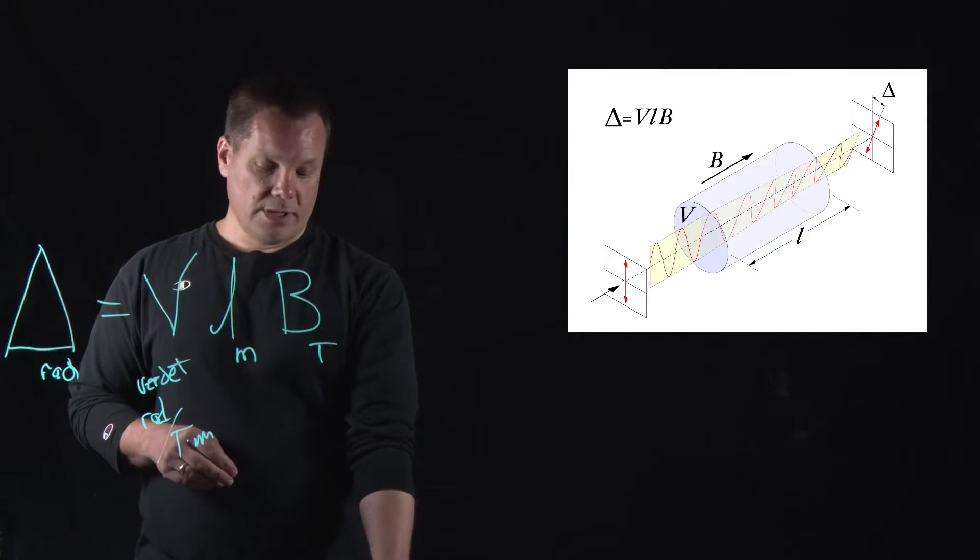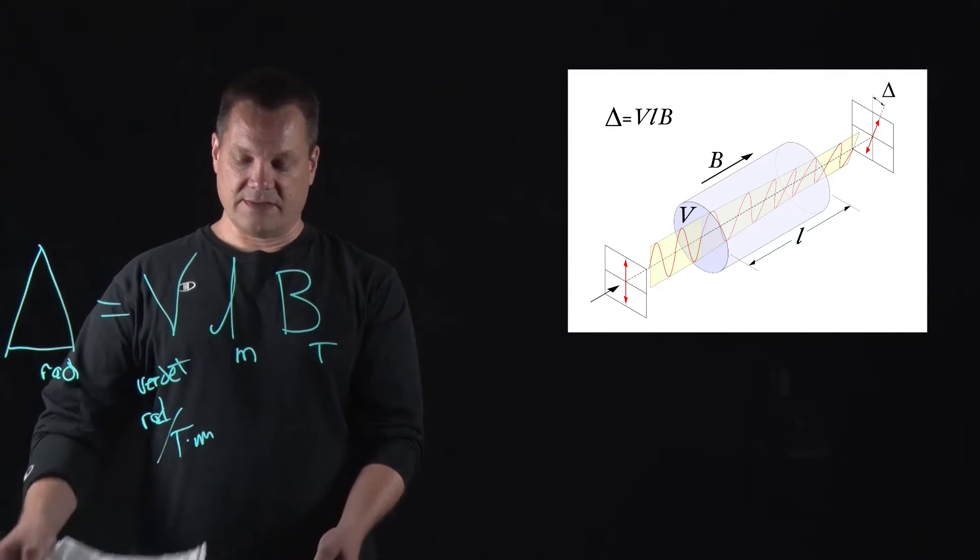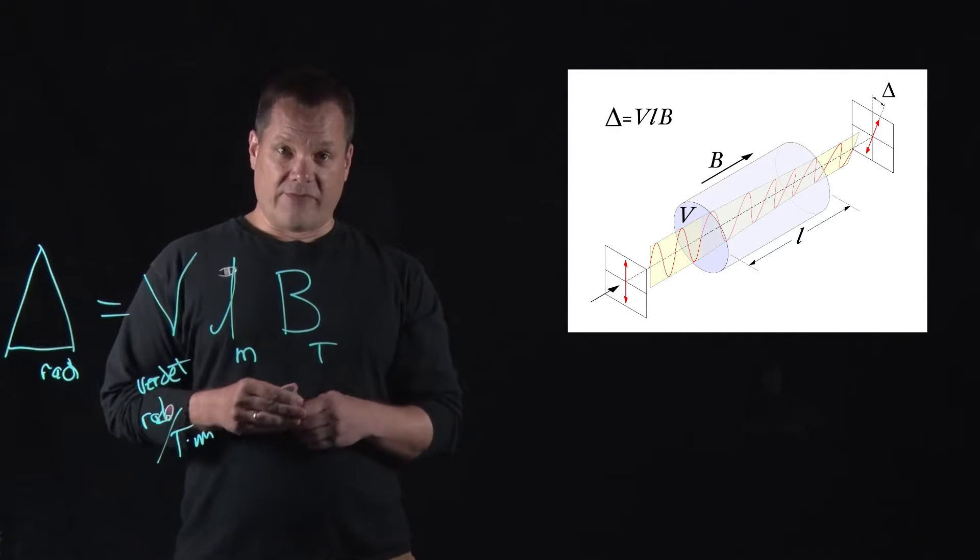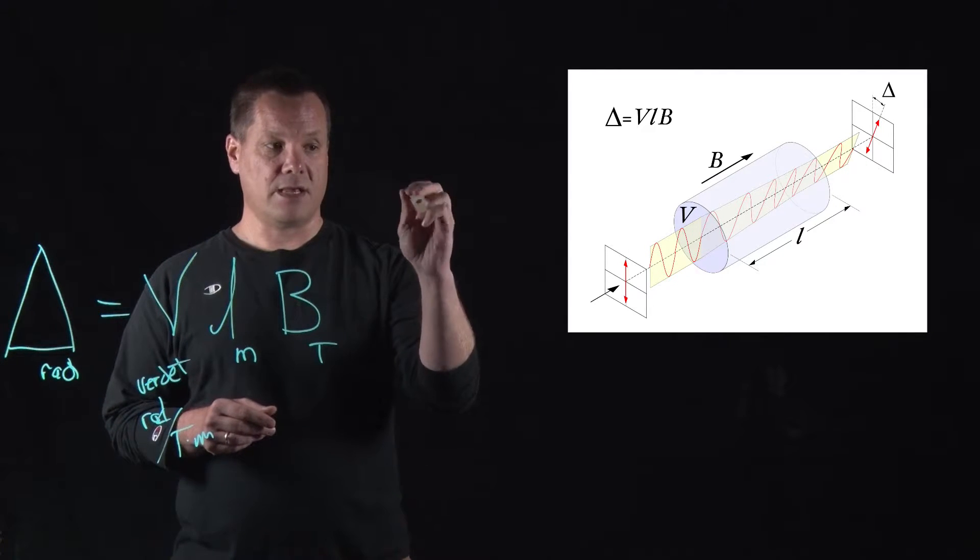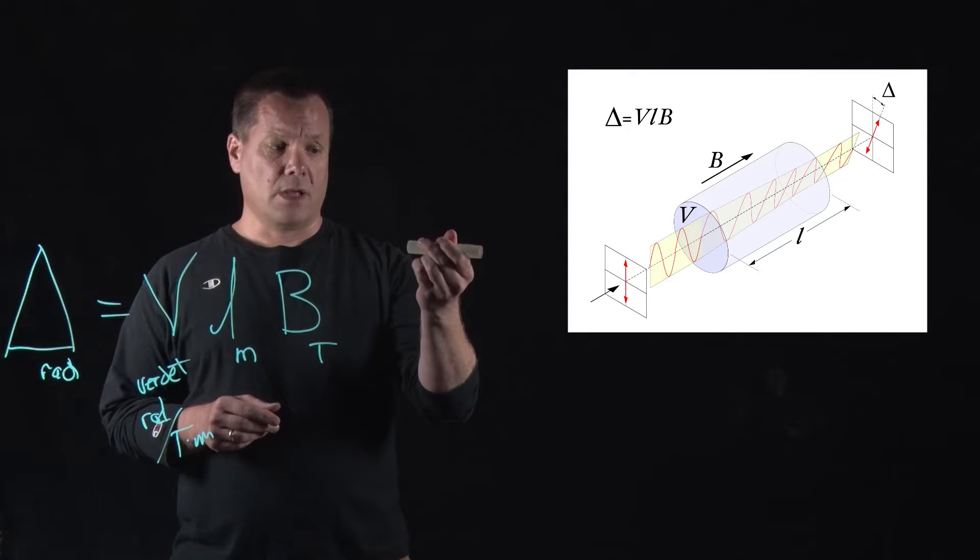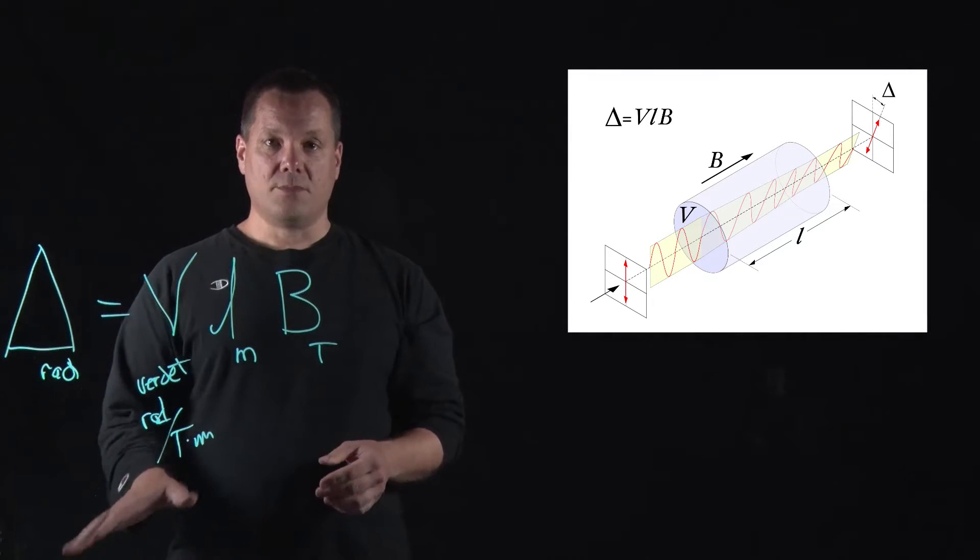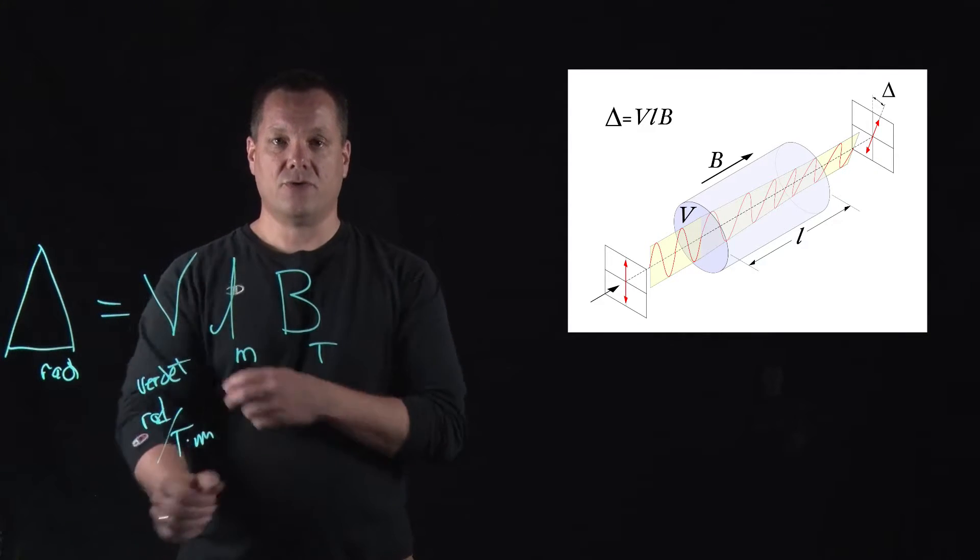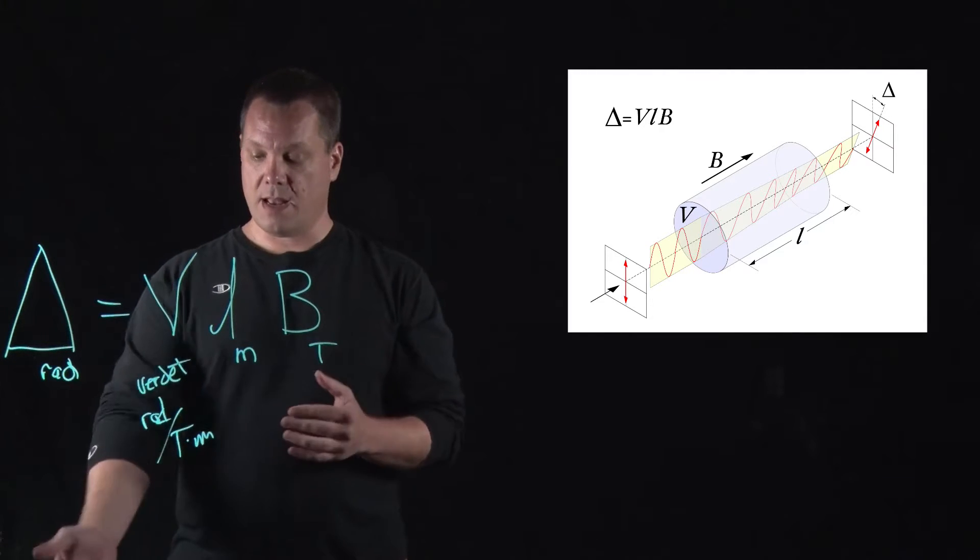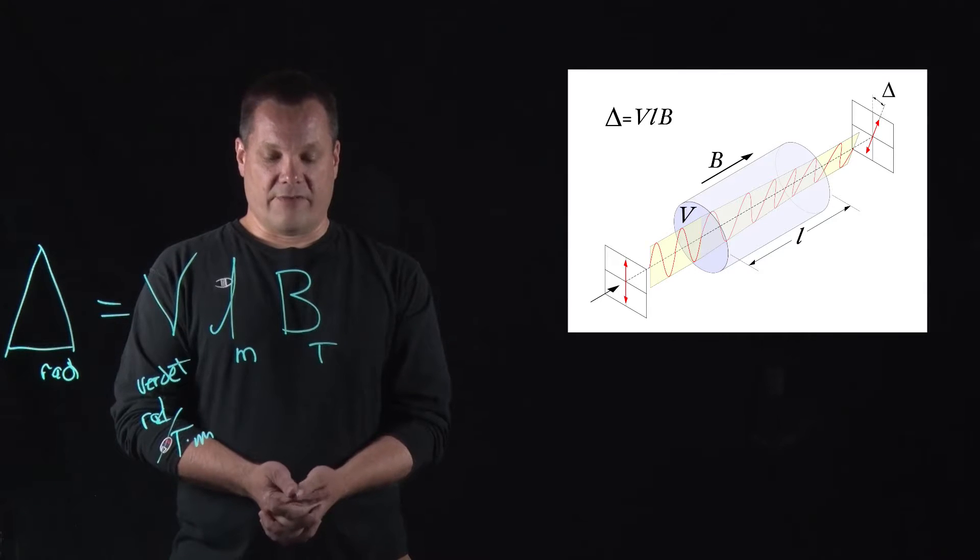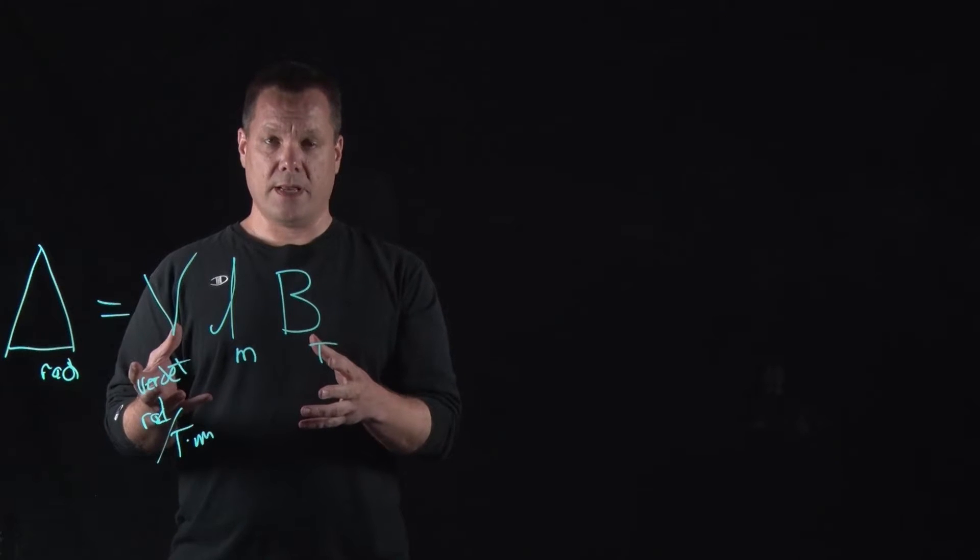And we really owe it to the tenacity of Michael Faraday. When he first discovered this effect back in 1845, he went through many, many materials. And it wasn't until he used something very similar to this, this is leaded glass. Back then it was called flint glass. Until he used that object, he went through hundreds and hundreds of materials testing and trying to measure angles. He finally found it. And that's why it's named the Faraday effect.